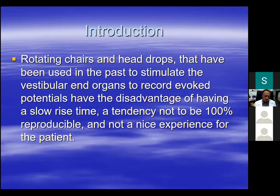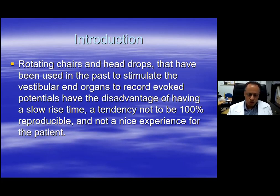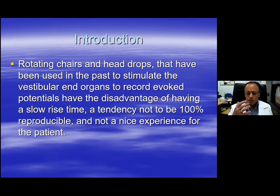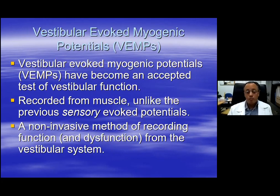Evoked potentials require a consistent stimulus to be given — for example, visually evoked potentials, brainstem auditory evoked potentials, etc. For vestibular evoked myogenic potentials, the original stimulus used when designing these evoked potentials was a physiological or natural stimulus to create head acceleration. That was to place patients in rotating chairs or allow the head to drop from a lying-down position. But as you can understand, these examinations were difficult for the patient, not very reproducible between trials, and produced potentials that were of long latency. We now use sound stimulation, which will be described shortly.